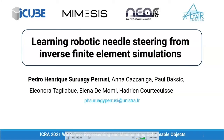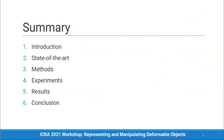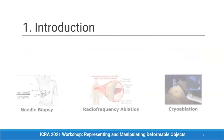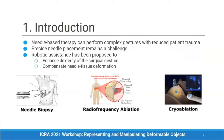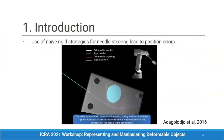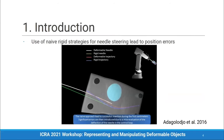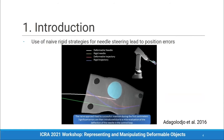Welcome to the ICRA 2021 workshop presentation: learning robotic needle steering from inverse finite element simulations. In this work we addressed needle-based therapies in which precise needle placement remains a challenge. Robotic assistance has been proposed to enhance the surgical gesture and compensate for the complex coupling between needle and tissue during insertion. We specifically target how the robot can account for the motion of deformable bodies. The use of naive rigid strategies for needle steering can lead to huge positioning errors.